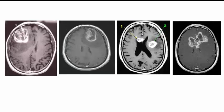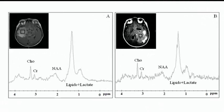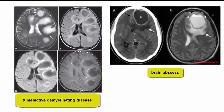On post-contrast imaging, irregular thick enhancement is typically seen that may be ring, solid, nodular, or patchy. MR spectroscopy demonstrates decreased NAA; choline level is increased, and a lipid-lactate peak may be present.